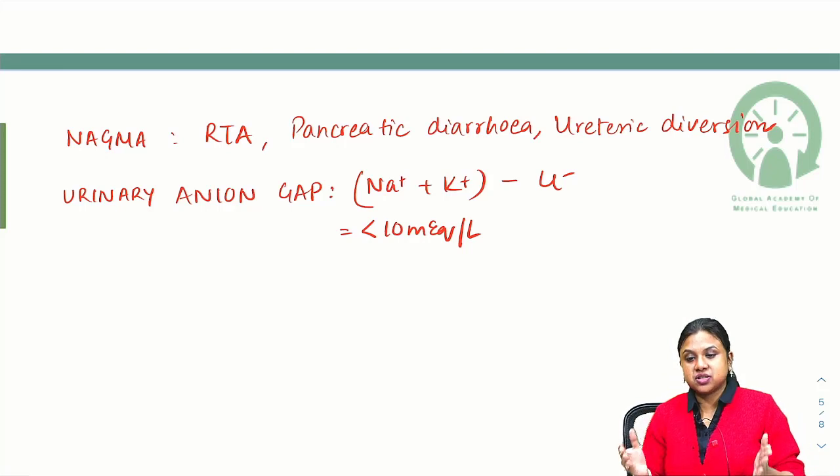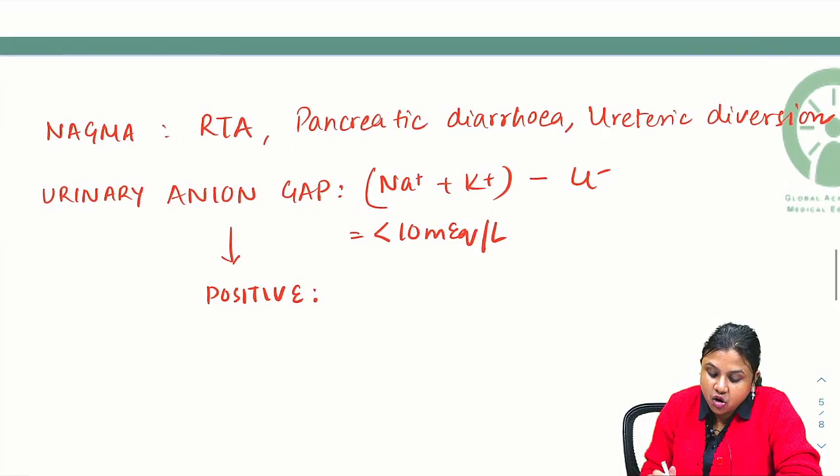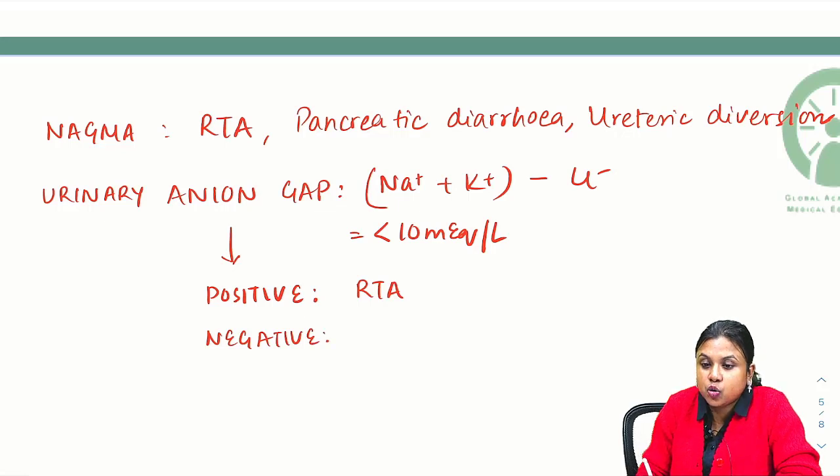If it is positive, it is because of distal acidification defect or renal tubular acidosis. If it is negative, that means the chloride level is more, which is why it comes out negative, mainly in GI loss of bicarb.